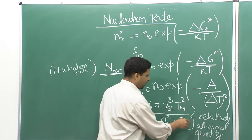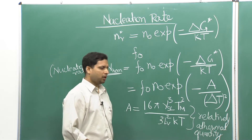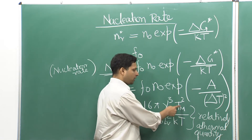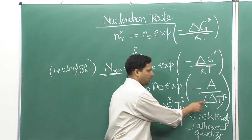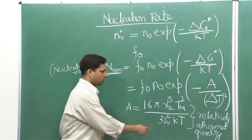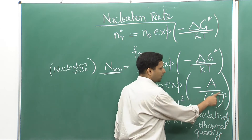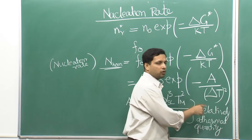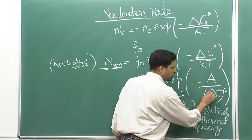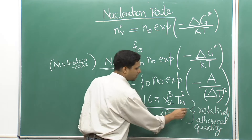Let us say you are very close to T_m, just 1 degree below it, so T = T_m − 1 and ΔT = 1. If you change the temperature to T_m − 2, T has changed by a very minor quantity, but ΔT has become twice, and its square becomes 4. So the whole quantity 1/ΔT² becomes 1/4. This is a much more dominant term, and in that respect A is an athermal quantity.